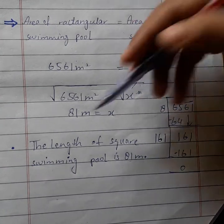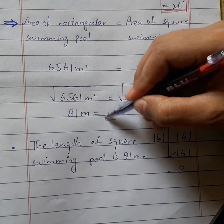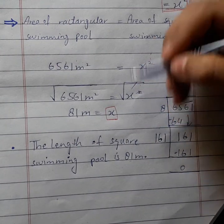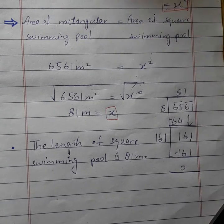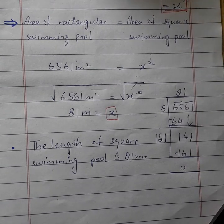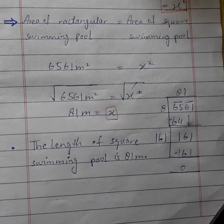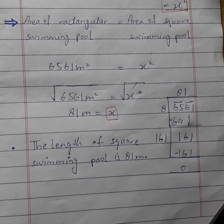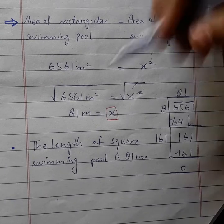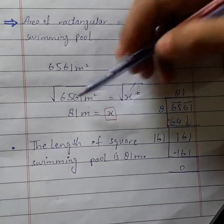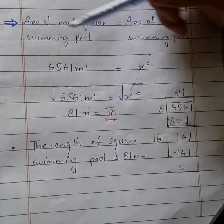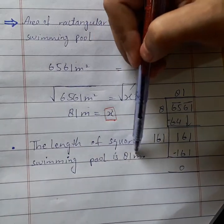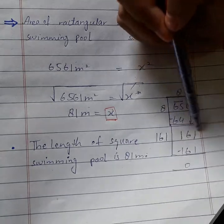Find the length of the square shaped swimming pool. Length of the side of the square swimming pool: x is what we need to find out. x = 81 meters, because the square root of 6561 is 81. Therefore, the length of the square swimming pool is 81 meters.